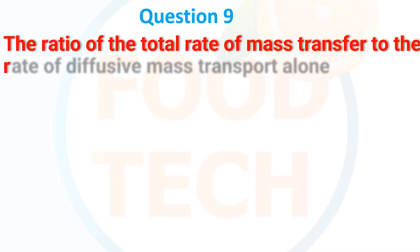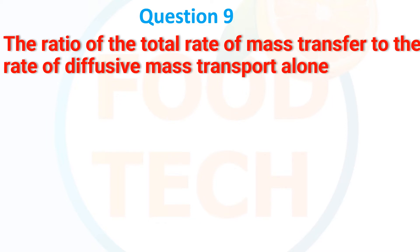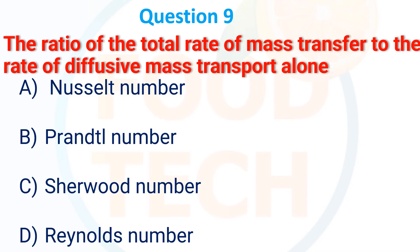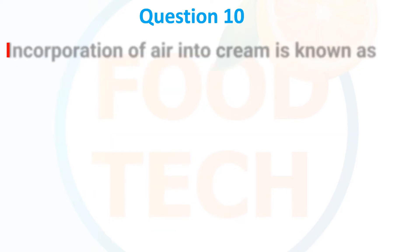Next MCQ: The ratio of the total rate of mass transport to the rate of diffusive mass transport alone is represented by which dimensionless number? Options: (A) Nusselt number, (B) Prandtl number, (C) Sherwood number, (D) Reynolds number. The correct answer is C — Sherwood number.